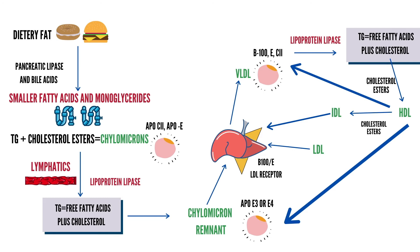High density lipoproteins serve several important functions in cholesterol metabolism. The main role of HDL is to take excess cholesterol from peripheral tissue and deliver it to IDL, VLDL, and chylomicron remnants so they can return it to the liver. Free cholesterol and phospholipids are transferred from peripheral cell membranes to the HDL molecule. The free cholesterol is then esterified by an enzyme called LCAT, which requires the apoprotein A1 on HDL. HDL then transfers these cholesterol esters to other lipoproteins for transportation back to the liver.